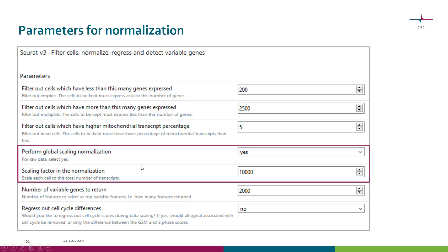The normalization step is part of this Chipster tool, which also performs various other things discussed in other videos. Here we focus on two parameters: do you want to perform global scaling normalization, and if so, what scaling factor do you want to use?